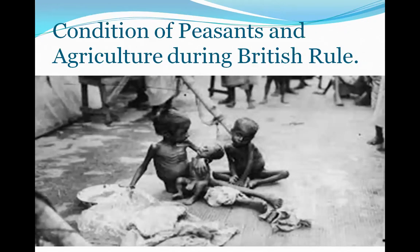Condition of the peasants and agriculture during British rule: The British got a new opportunity to increase their income after acquiring the Diwani right — the right to collect land revenue. They were collecting land tax of Bengal, Bihar, and Orissa. They started exploiting peasants to earn more revenue, and as a result the peasants became poorer.